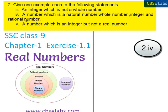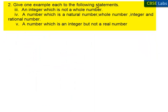Moving on to the next problem, we need to find one example for the following statements. The fourth part asks for a number which is a natural number, whole number, integer, and rational number.